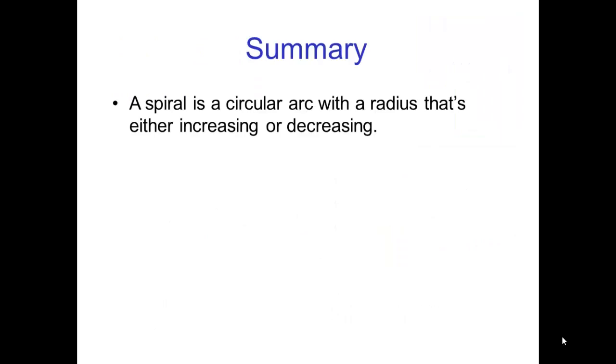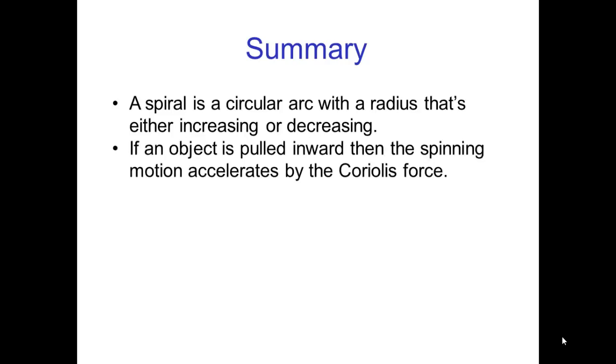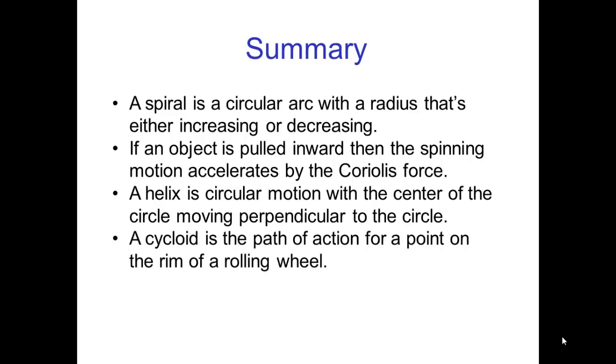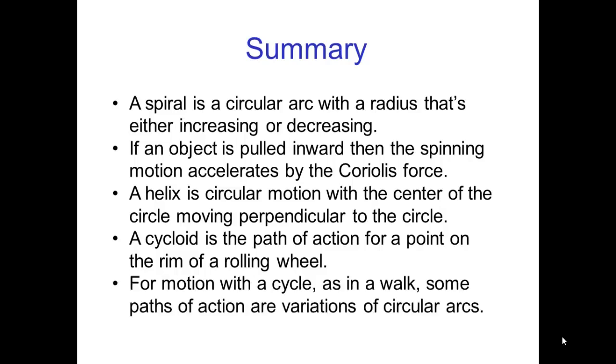So, in summary, a spiral is a circular arc with a radius that's either increasing or decreasing. If an object is pulled inward, then the spinning motion accelerates by the Coriolis force. A helix is circular motion with the center of the circle moving perpendicular to the circle. A cycloid is the path of action for a point on the rim of a rolling wheel. And finally, for motion with a cycle, as in a walk, some paths of action are variations of circular arcs.